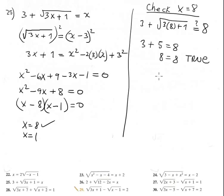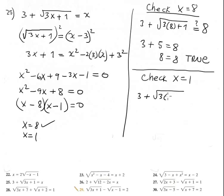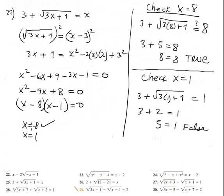Checking x equals 1: 3 plus the square root of 3 times 1 plus 1 should equal 1. That's 3 plus the square root of 4, which is 3 plus 2 equals 5, not equal to 1 — completely false. Therefore x equals 1 is extraneous. The only solution set for this equation is {8}.